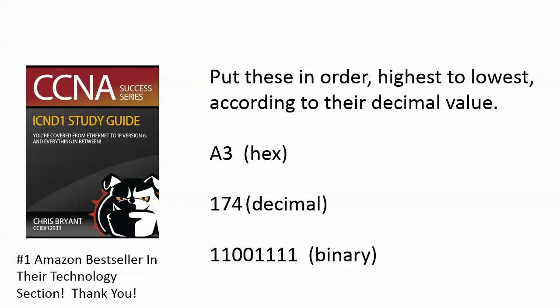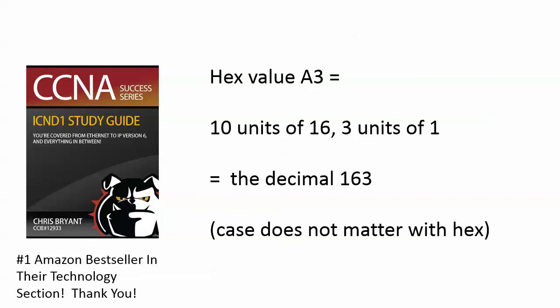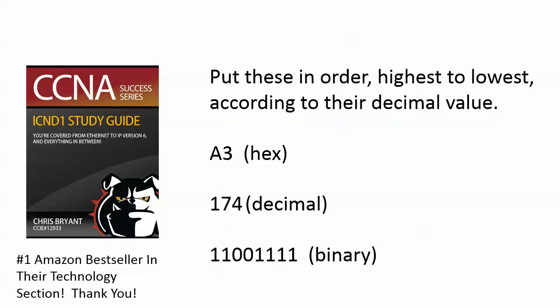So we've got A3 base 16, which means working from right to left, we have three units of 1, and then A units of 16. So what did we say A was equivalent to? A equals 10. That means we have 10 units of 16 and three units of 1 when you're looking at the hex value A3. So right there you've got the decimal 163, and by the way, case does not matter with hex. It could be an uppercase A, a lowercase A. It means the exact same thing.